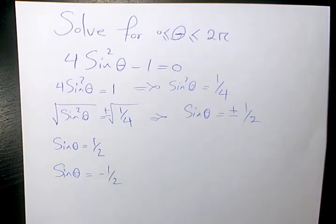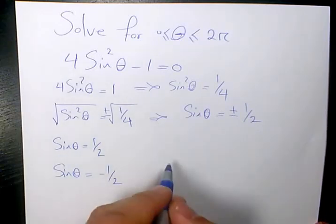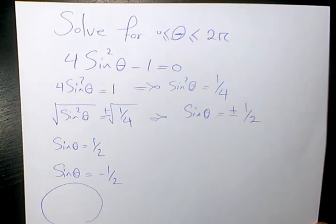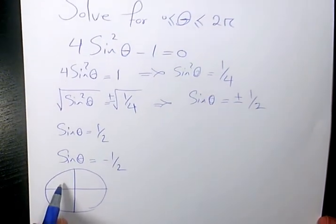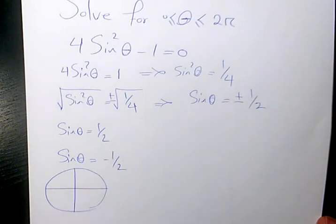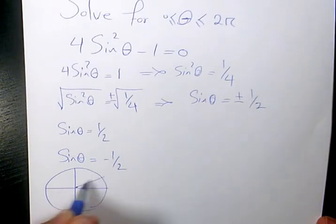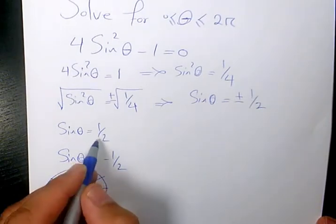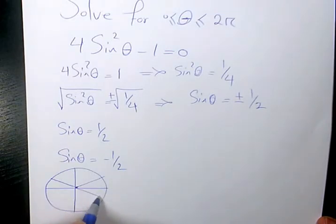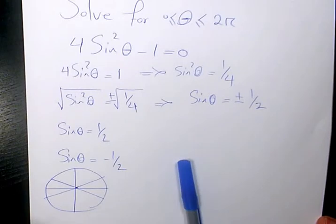So sine is positive in quadrants 1 and 2, and sine is negative in quadrants 3 and 4. So these two are going to be the answer to the first one, and these two are going to be the answer to the second one.